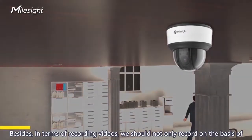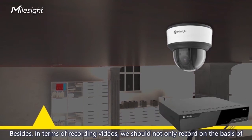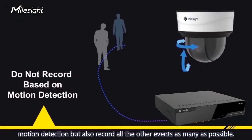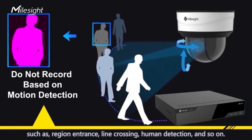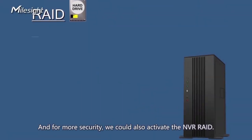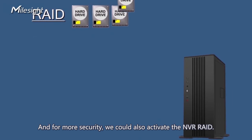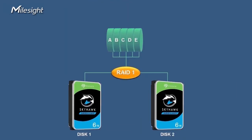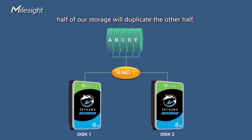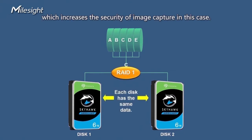In terms of recording, we should not only record based on motion detection, but also record all other events as much as possible — such as region entrance, line crossing, human detection, and so on. For more security, we could also activate RAID on the network video recorder. For example, with RAID 1, half of the storage duplicates the other half, which increases the security of image capture.